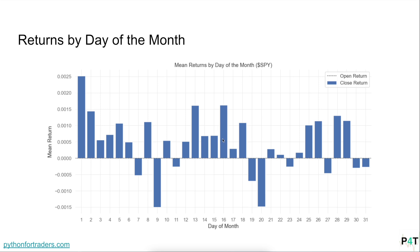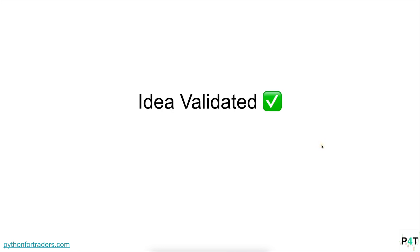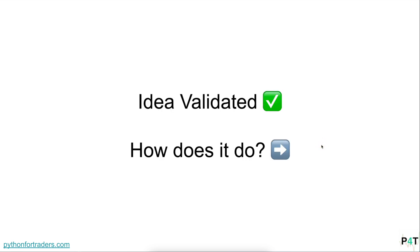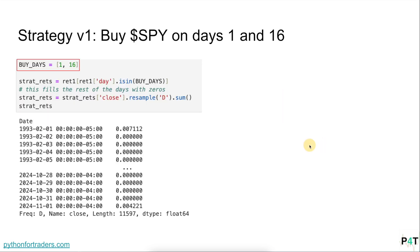If we look at this visually, we can see the returns by day of the month for all of SPY. The first day of the month has an extremely high return, and number two is the 16th. We even see little pockets around these — on the first through the fifth it's positive, then around the 13th through the 18th we have another pocket of positivity, and at the end of the month we also have another pocket of mostly positive values. This validates our idea.